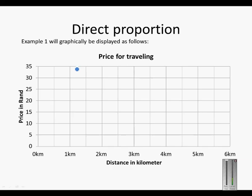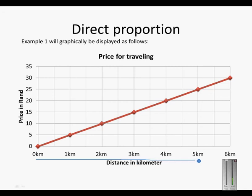Graphically it will be displayed as follows. If you don't travel at all, you won't have to pay anything. 1 kilometer is 5 Rand. 2 kilometers is 10 Rand. 3 kilometers, 15 Rand. So the more kilometers you travel, the more money you will pay.